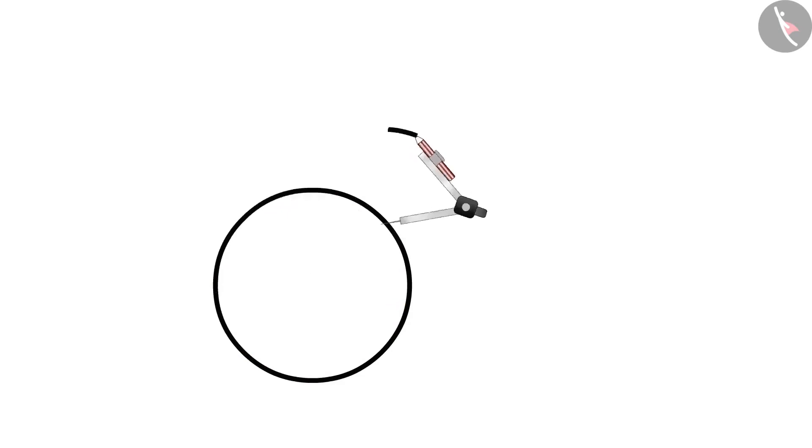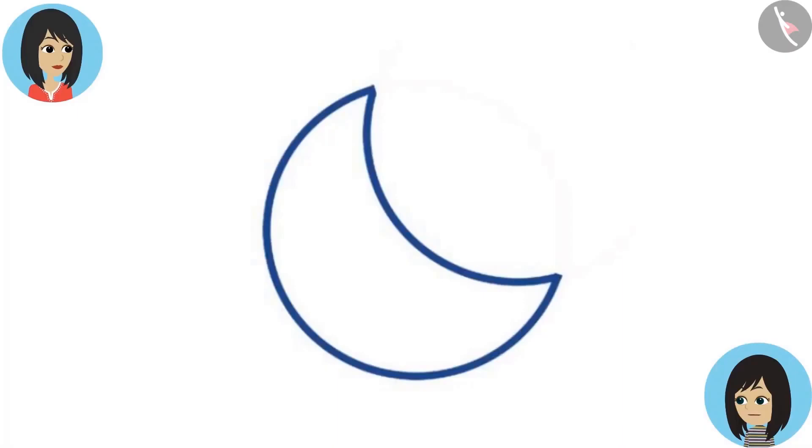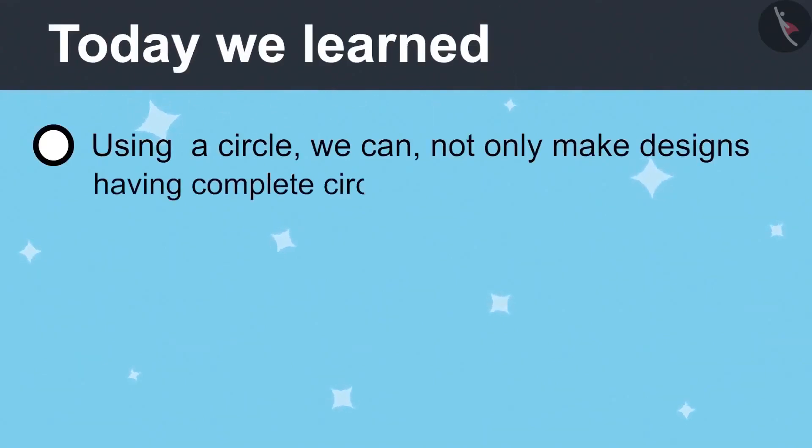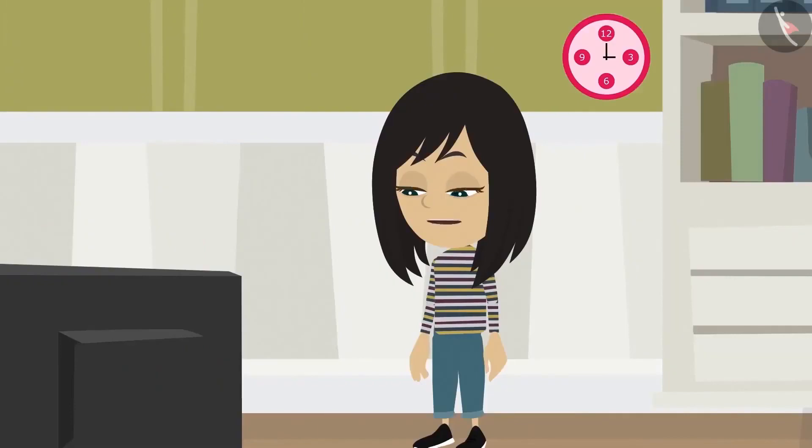First, we draw a small circle. After that, we make a second circle which overlaps the first circle. Then we remove the line of the first circle which comes inside the second circle. We will not remove the line of the second circle which was inside the first circle. Look. A moon-like shape is formed. You have become very intelligent. Thank you. But you see that no full circle is visible in this shape, yet it is a shape made from a circle. This means using a circle, we cannot only make designs having complete circles like Rangoli, but also make designs that do not have a full circle such as the moon. Tomorrow, Vandana and I will together try to find designs made with many circles.